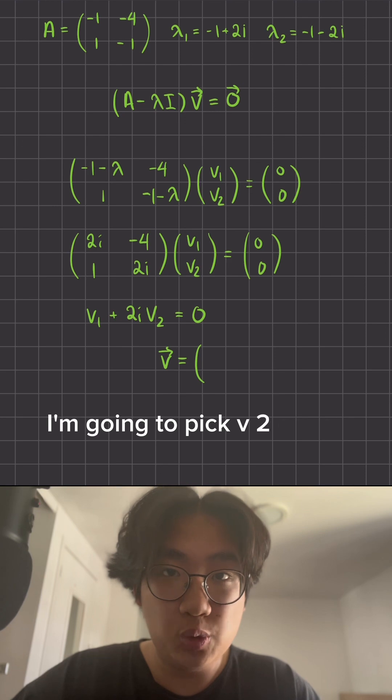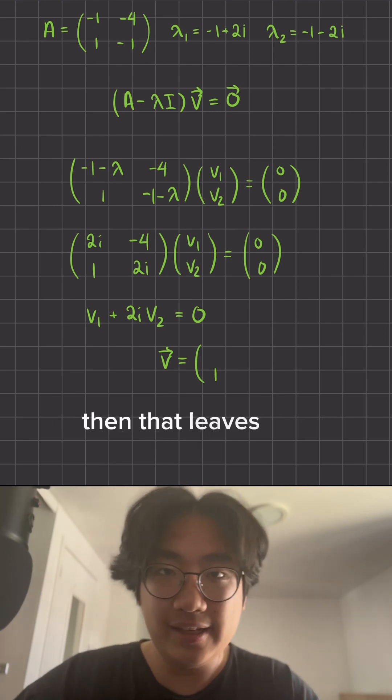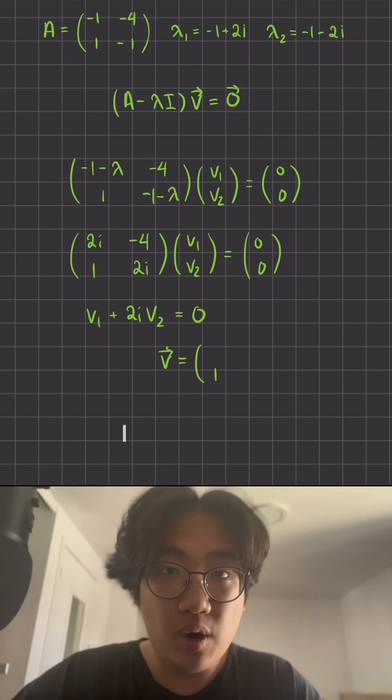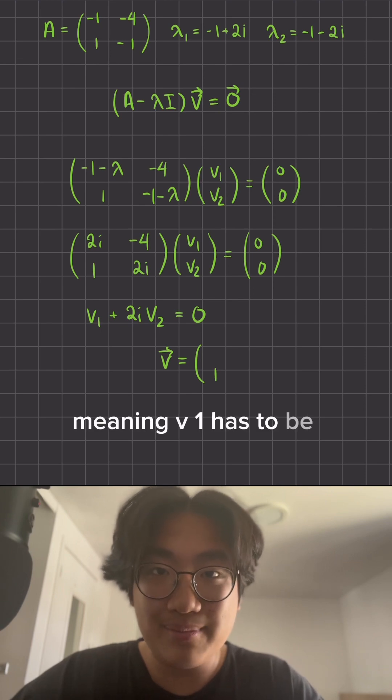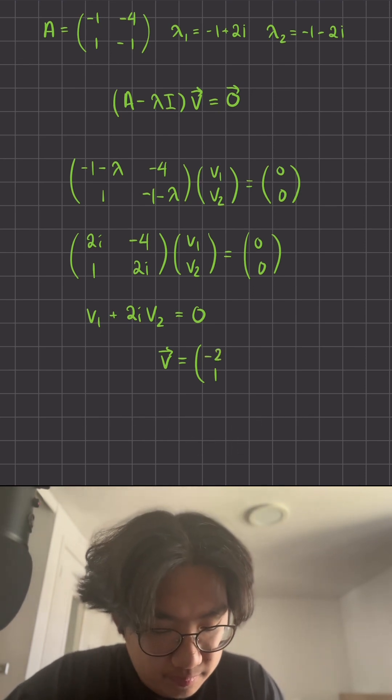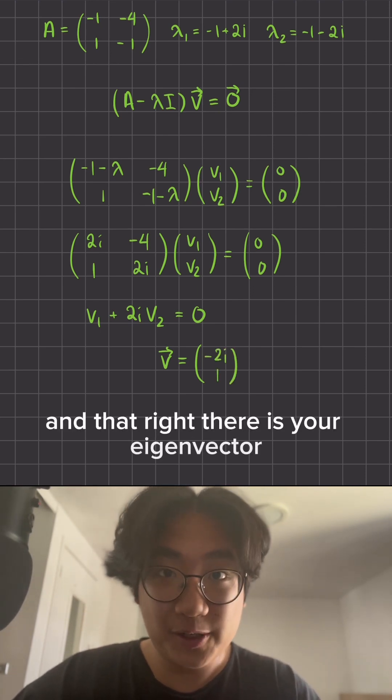In this case, I'm going to pick v2 equal to 1 first, and that leaves our equation to be v1 plus 2i is equal to 0, meaning v1 has to be negative 2i. And that right there is your eigenvector.